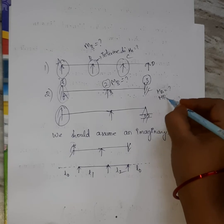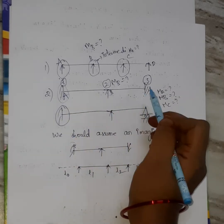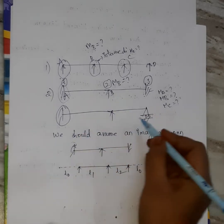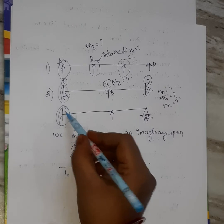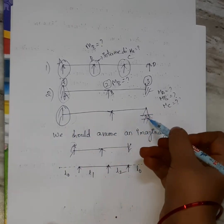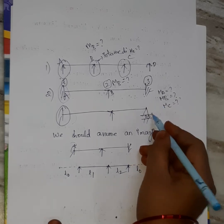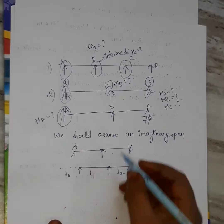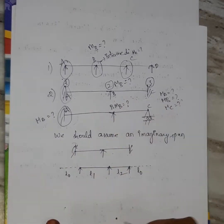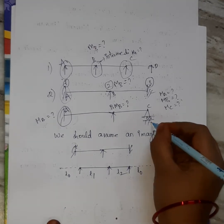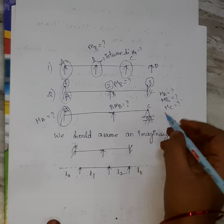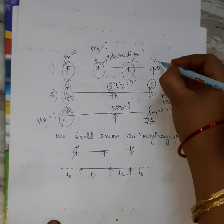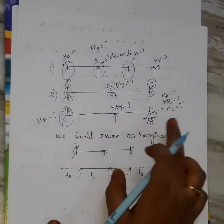We calculate the moment at A, B, and C. Because both ends are fixed, the moment also acts at the fixed support, and the intermediate support acts as a fixed support, so we calculate the moment there too. For a roller support, the moment is 0. For a simply supported end, the moment is also 0. So, the moment at C is 0 for a simply supported end.